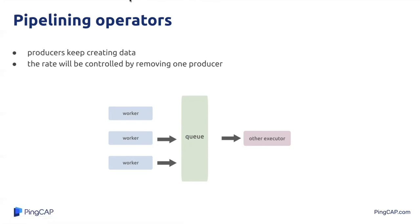For now, we have discussed the causes of SQL Engine OOM and categorized those situations into two kinds. We also talked about the solutions: for the in-memory resident objects, we use a limited-size cache; for the pipeline breakers, we use the spill-to-disk strategy; and for the pipeline operators, we use the adaptive control strategy. Next, we will have Huayu introducing the implementation in TIDB.